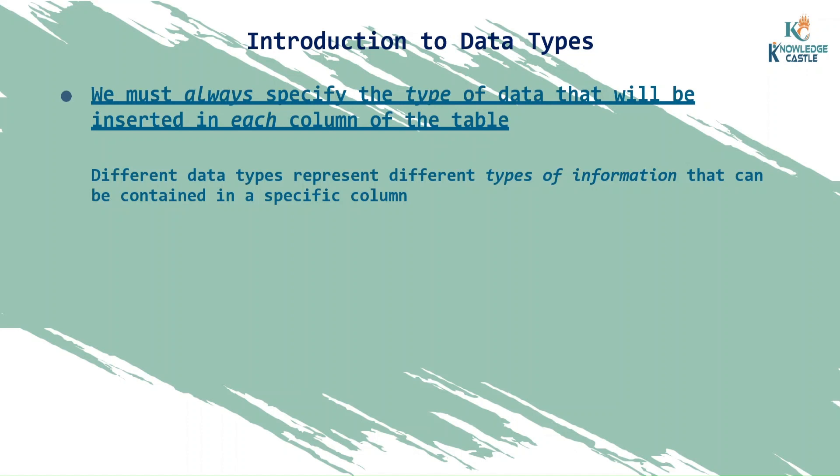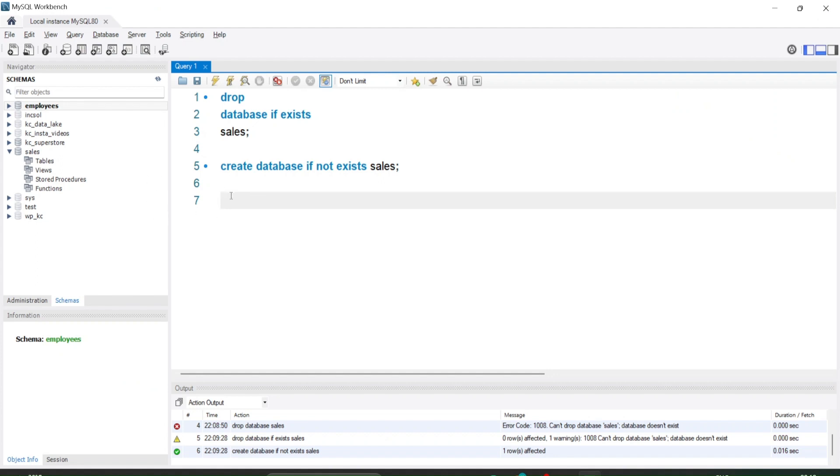Different data types represent different types of information that can be contained in a specific column. The best part of SQL is if I'm saying my column is a date column, I can only enter date fields into it. It's a kind of data validation. If my data type is numeric integer, I can only add numeric values. If someone tries to enter wrong data, it will automatically give you an error that the data type is mismatched. It's a good thing, and we do that while designing the database.